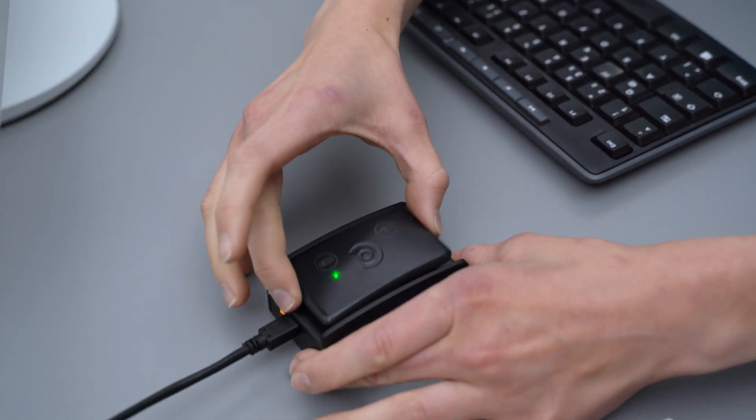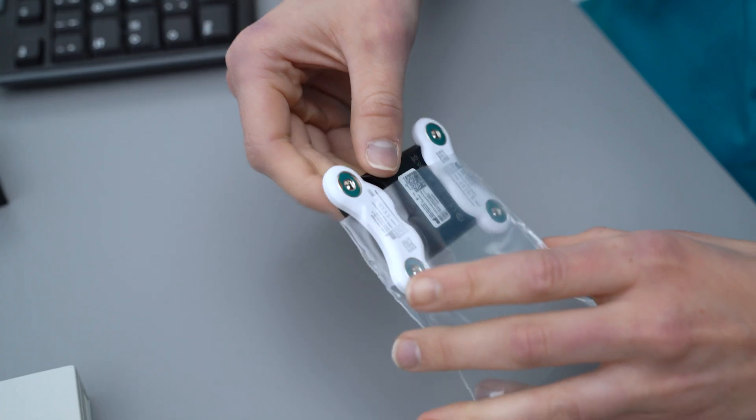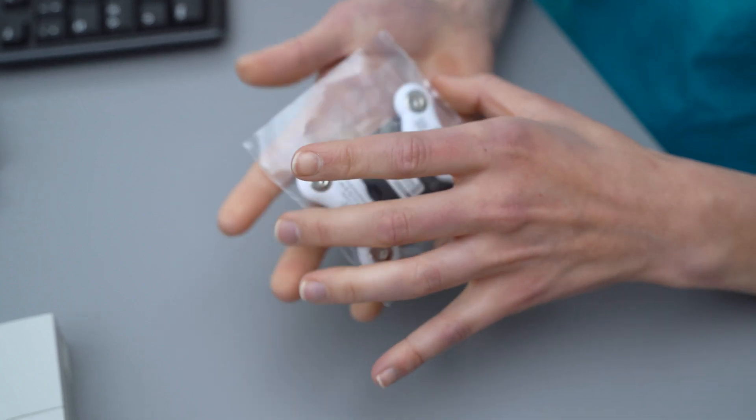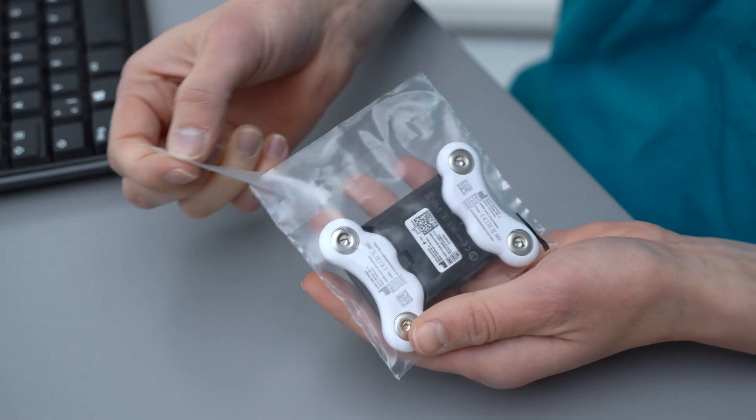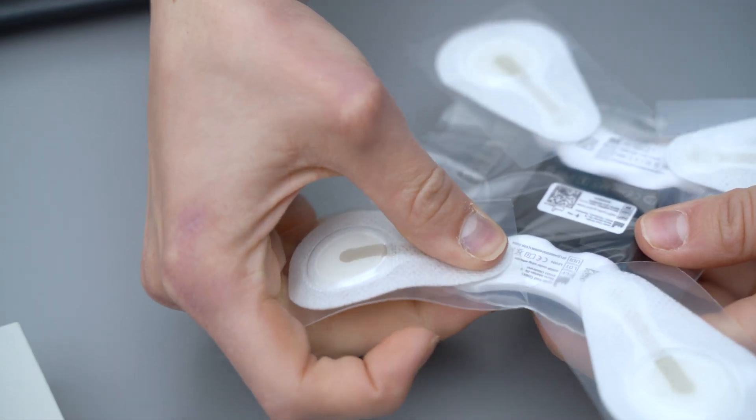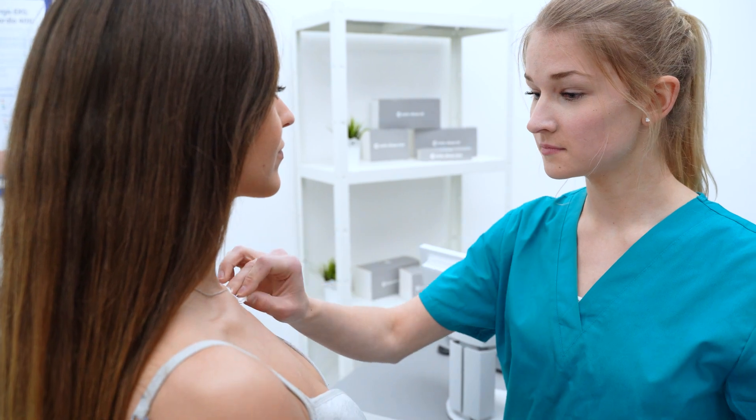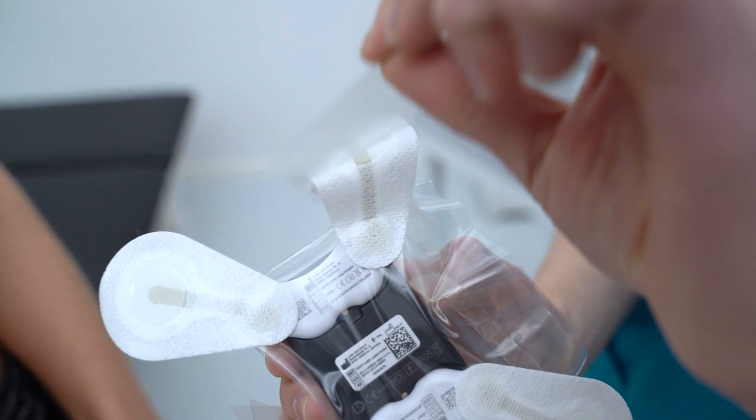Next, attach the selected lead to the guard halter and protect it with the CustoClean Hygiene Bag. In this video, you can see the application with CustoWing. Now, place the CustoGuard Halter on the patient and check the ECG quality.